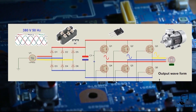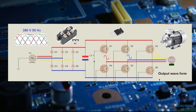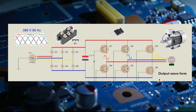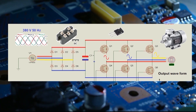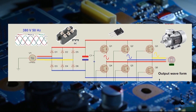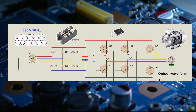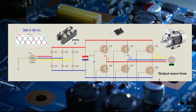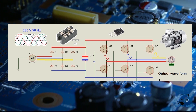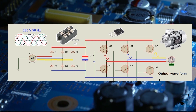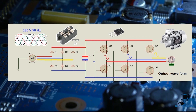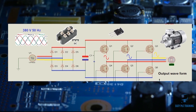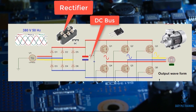By using these switches we are controlling the frequency of the motor, which in turn controls the speed. As the basics of physics tell us, frequency is directly proportional to speed — if frequency goes high, speed goes high; if frequency goes down, speed goes down. By switching these IGBTs we can create any frequency we like.